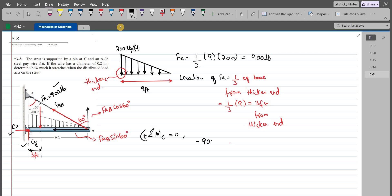The horizontal component of FAB force is passing through point C, so it does not have any moment with respect to point C. The vertical component of the FAB force is trying to rotate the strut in counterclockwise direction, so the moment is positive FAB cos 60 times 9 feet equals zero. FAB comes out to be 600 pounds.